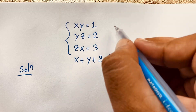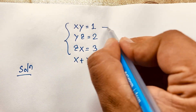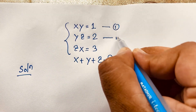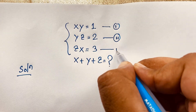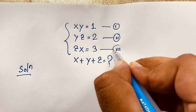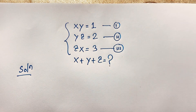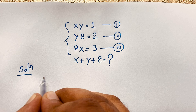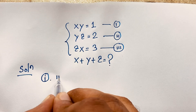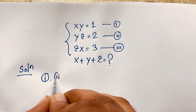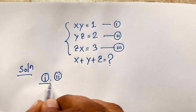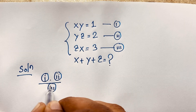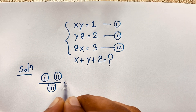This is our first equation, this is our second equation, and this is our third equation. Now first of all I multiply the first equation and second equation and divide by the third equation.